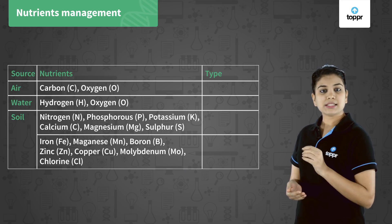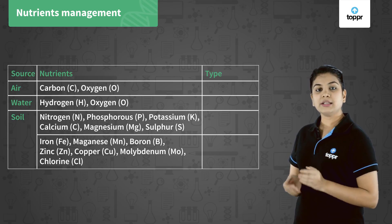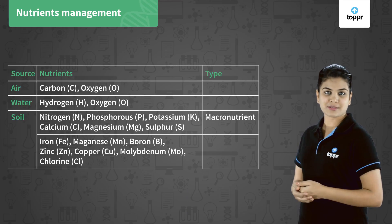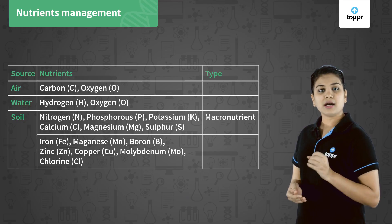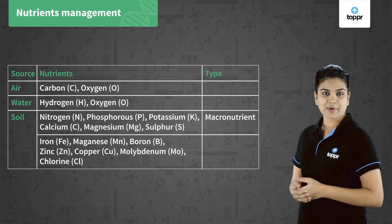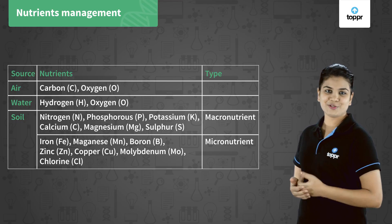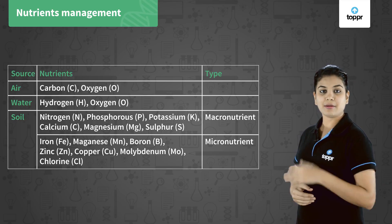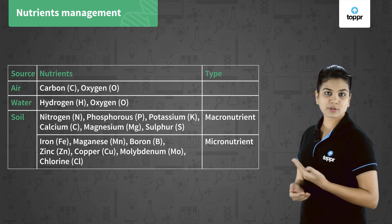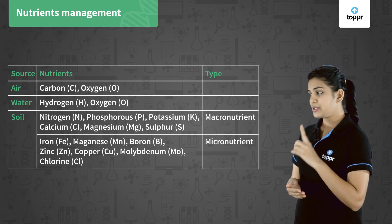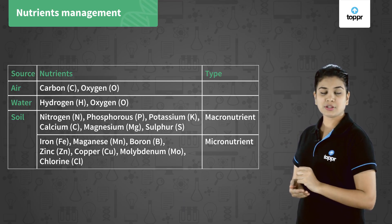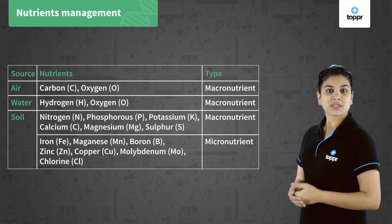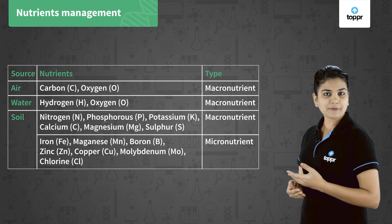Out of these 13, six nutrients are required in large quantities and are called macronutrients. Nutrients are divided into two major categories: macro and micro. Macronutrients are required in large quantities and, besides carbon, hydrogen, and oxygen, they include nitrogen, phosphorus, potassium, calcium, magnesium, and sulfur.